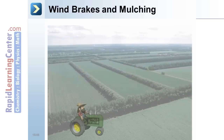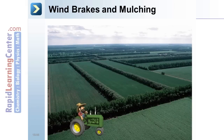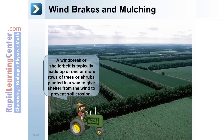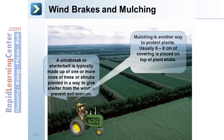A windbreak or shelter break is typically made up of one or more rows of trees or shrubs planted to give shelter from the wind and prevent soil erosion. Mulching is another way to protect plants — usually six to eight centimeters of covering is placed on top of plant stubs.